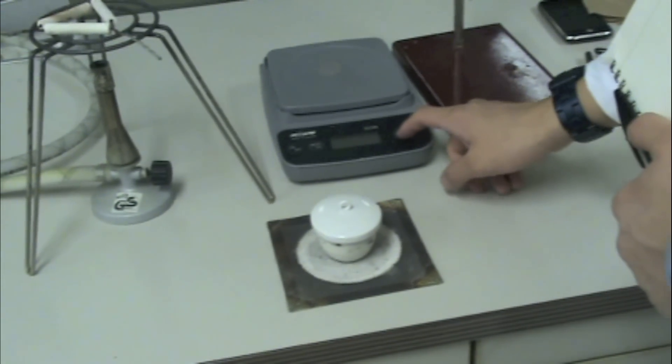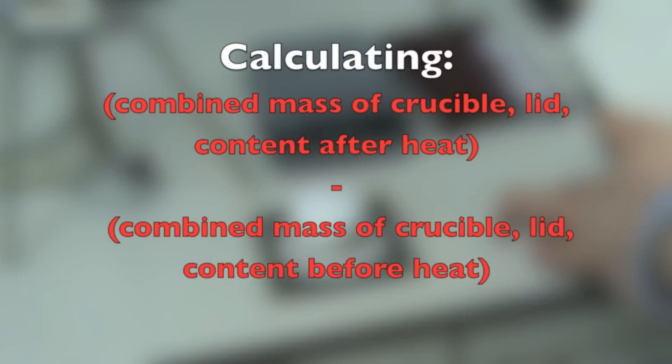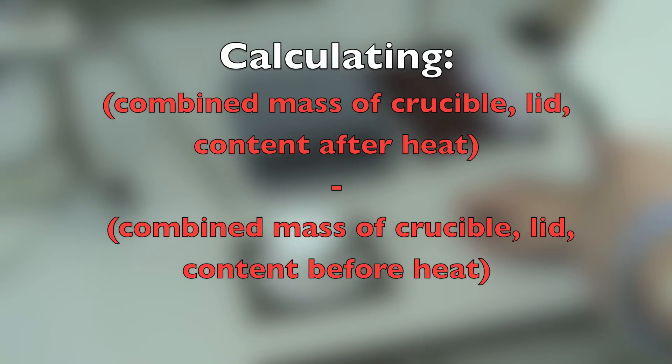Okay, once the crucible is cooled, you have to weigh it, right? Now, to calculate the mass of the content of the crucible, measure the combined mass of the crucible, lid, and contents at room temperature.